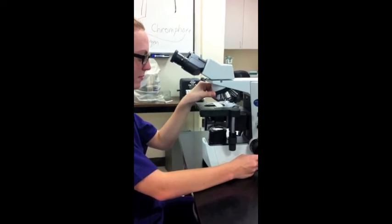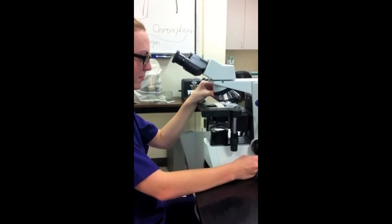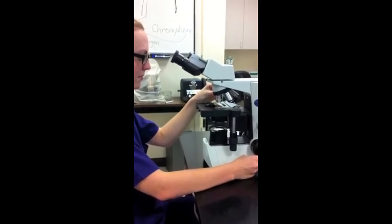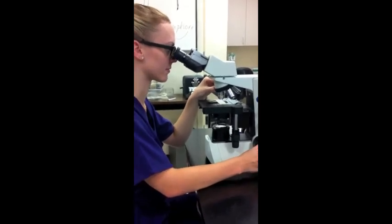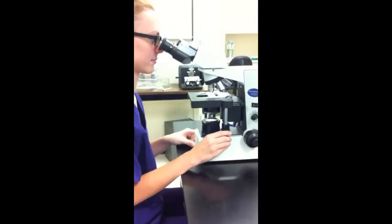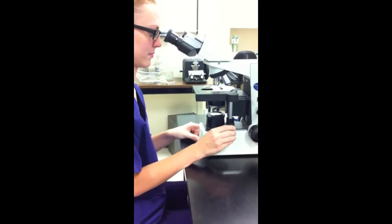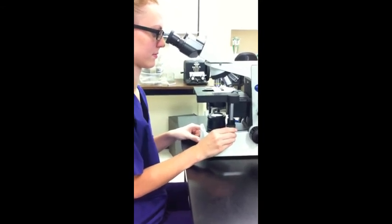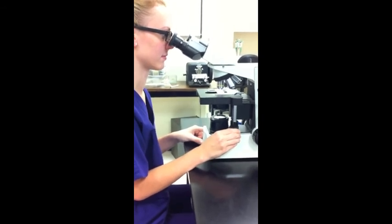Number nine, click the 10X objective into place and use the fine adjustment knobs to clearly focus your specimen. Number 10, use the stage adjustment knobs to move your specimen to the middle of the field of view. You must do this before moving to higher magnification because your field of view becomes much smaller. This slide is 10X.